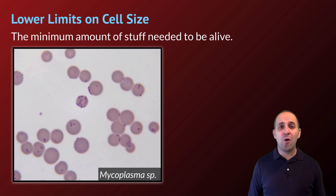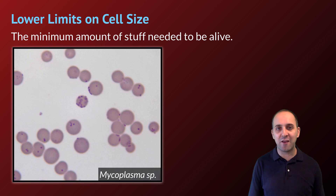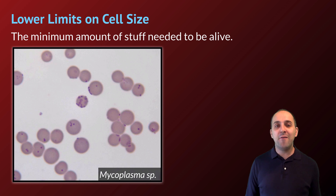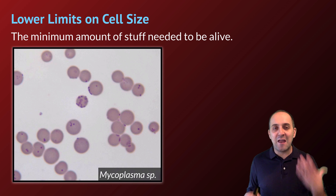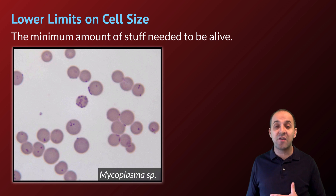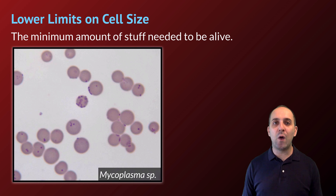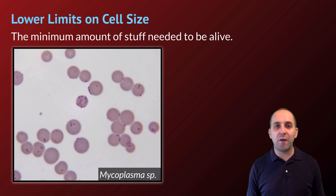But why is that? What is it that prevents cells from being any larger or smaller? The smaller thing is probably pretty easy to get your head around. There's some minimum amount of stuff that needs to be inside of a cell for the cell to be able to live and carry out all the various life functions that cells carry out. We don't really have a handle on what exactly the minimum amount of stuff is, but we do know what some of the smallest cells on the planet are.